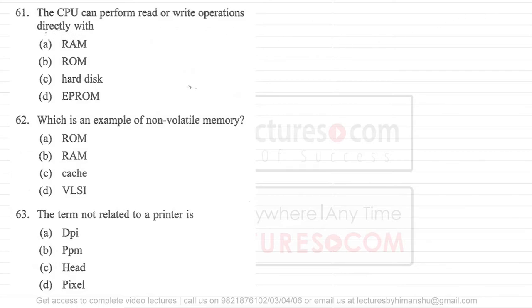Focus on the term directly, because CPU cannot directly write on hard disk. CPU generally writes on RAM, and from RAM we write data to the hard disk. So CPU can read or write operations directly from RAM. CPU cannot write on ROM because it is read-only memory. It cannot write on hard disk and it cannot write on EPROM.